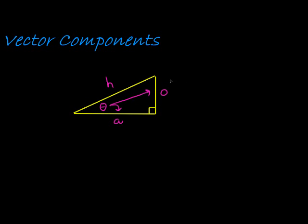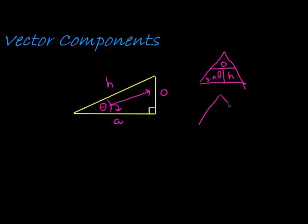You can use trigonometry to find any side length if you have another side length and this angle. I'm going to show you a trick I call ratio triangles. Sine of theta is one of the trigonometric ratios — sine of theta is opposite over hypotenuse. Cos of theta is adjacent over hypotenuse. And tan of theta is another one, but we're only going to use sine and cos for the purposes of this lesson.